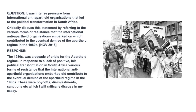With regards to the next question — It was intense pressure from international anti-apartheid organizations that led to the political transformation in South Africa — a possible introductory response could be: The 1980s was a decade of crisis for the apartheid regime. In response to a lack of positive, fair political transformation in South Africa, various forms of resistance that the international anti-apartheid organizations embarked on did contribute to the eventual demise of the apartheid regime in the 1980s. These were boycotts, disinvestments, sanctions etc., which I will critically discuss in my essay. You can also take note that we are using certain words from the question itself to formulate our introduction, and we want to state clearly that in our essay we are going to prove the international anti-apartheid organizations did indeed assist in bringing about the downfall of the apartheid regime.